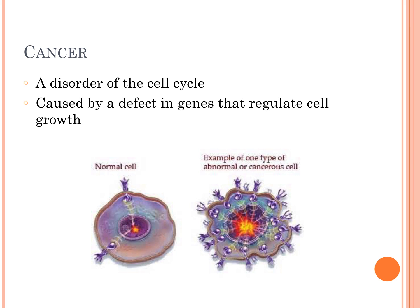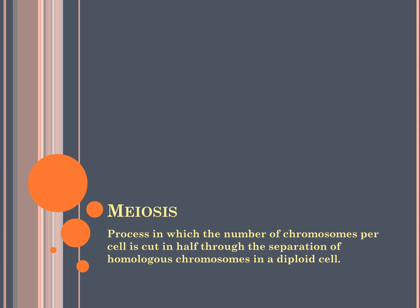That is the end of the section on mitosis. Meiosis is the process by which the number of chromosomes of the cell is cut in half by the separation of homologous chromosomes in a diploid cell. Basically, this is going to be the production of sex cells, and we'll talk about that whole process next.